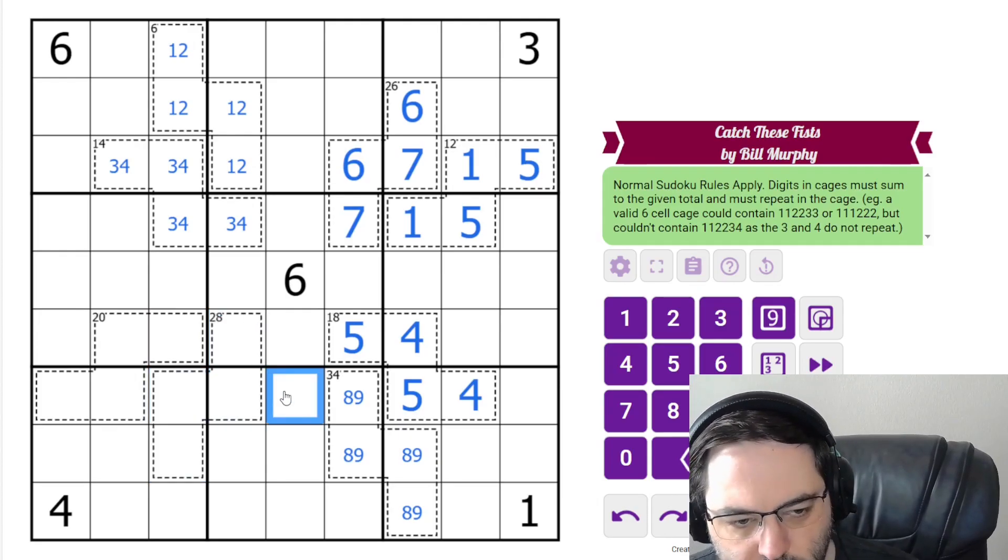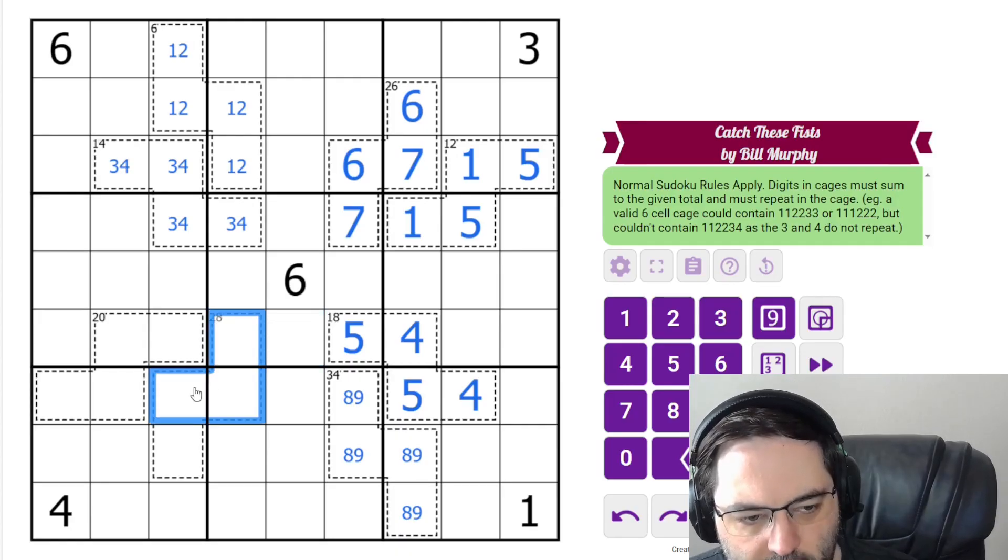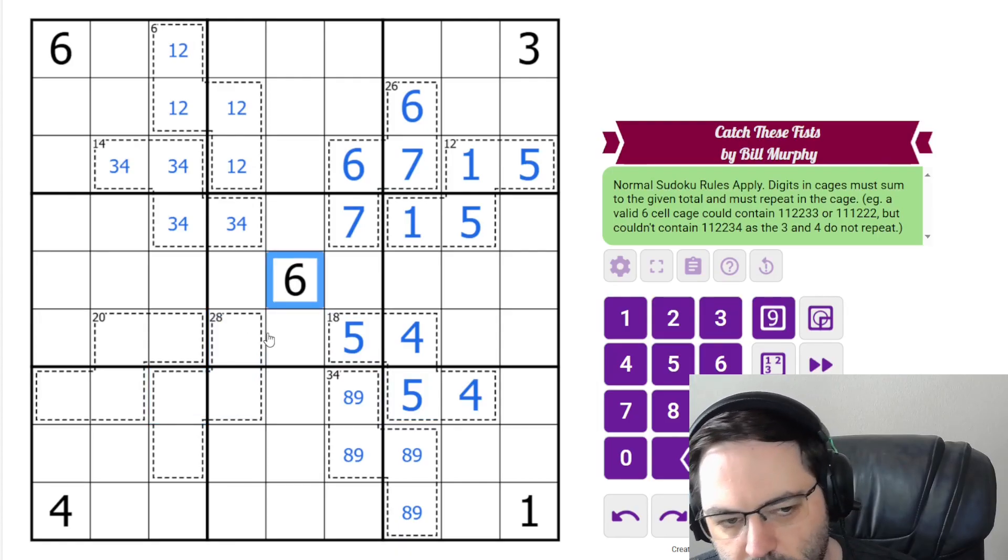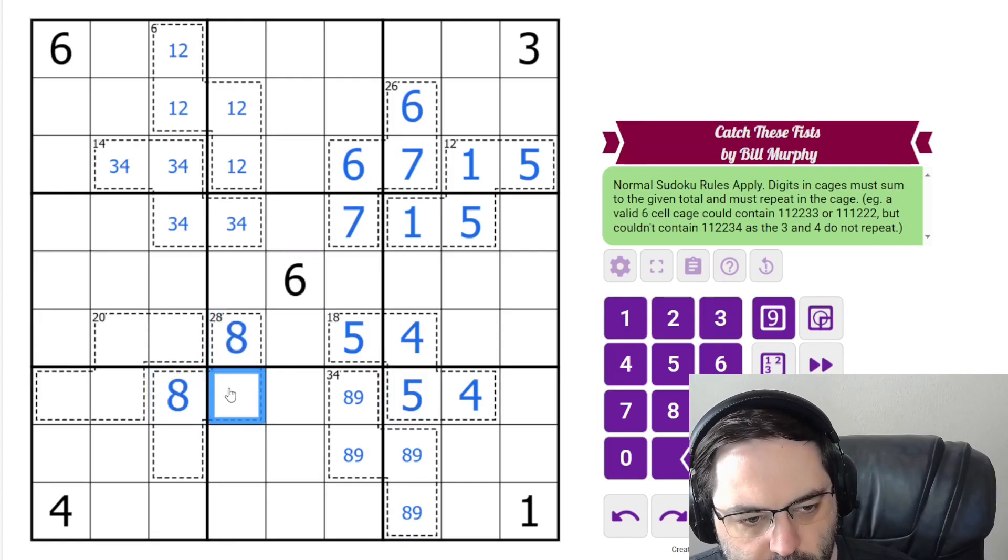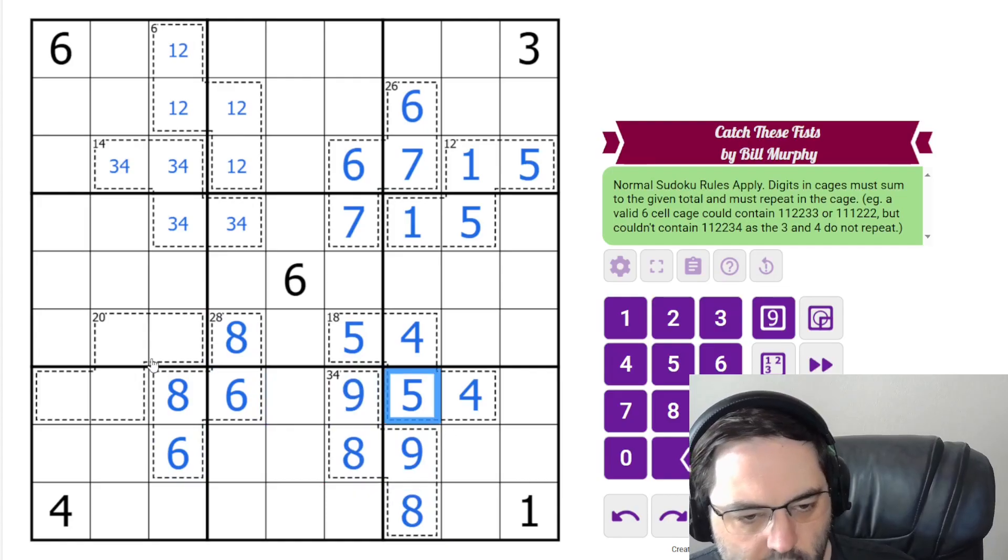This 28, we have some options. Half of 28 is 14, so we could have five, nine, or we could have six, eight. However, five cannot go in this cage. So we know we must have six, eight. And additionally, we have a six here, so we can just resolve it that way. Additionally, we have eights and nines looking at some of these cells. And that eight is going to resolve the eight, nine.